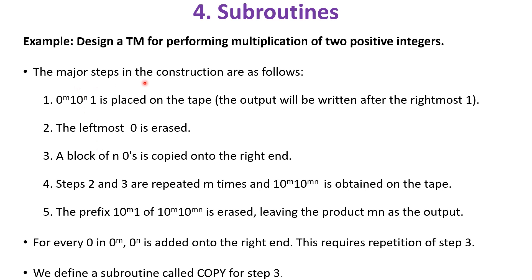The steps used to construct the Turing machine are: initially 0^m 1 0^n 1 is placed on the tape, the output will be written after the rightmost 1. The leftmost 0 is erased. A block of n 0's is copied onto the right end. Steps 2 and 3 are repeated m times and 10^n 10^mn is obtained on the tape. The prefix 1 0^m 1 of 10^m 1 0^mn is erased, leaving the product mn as the output.